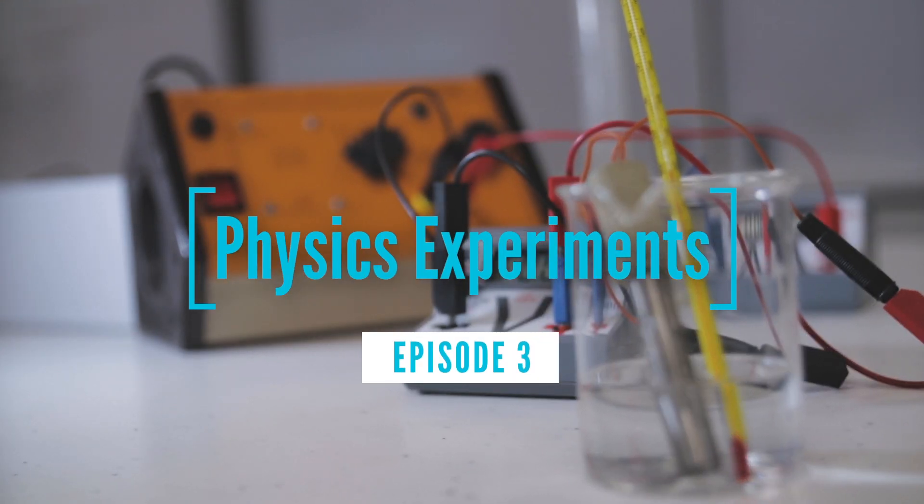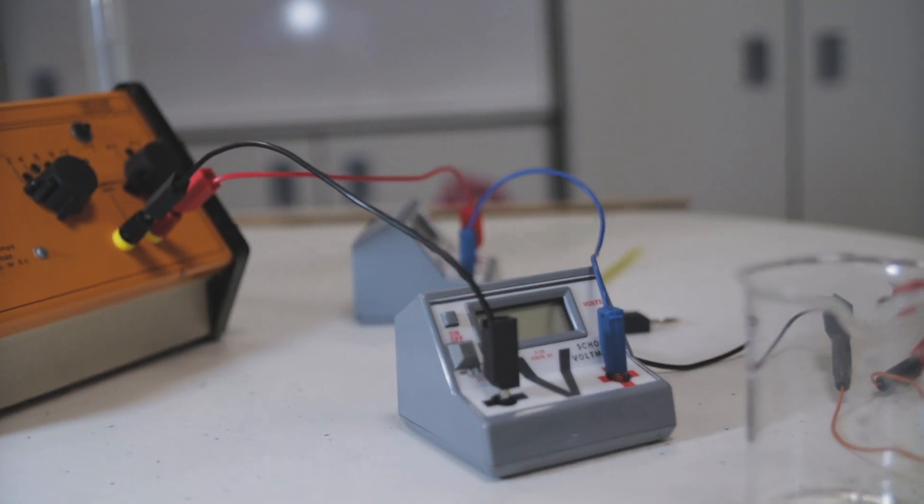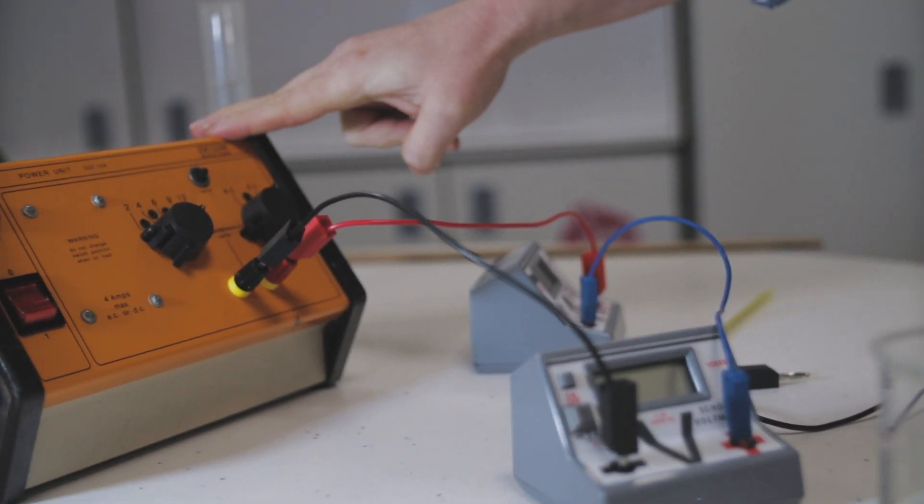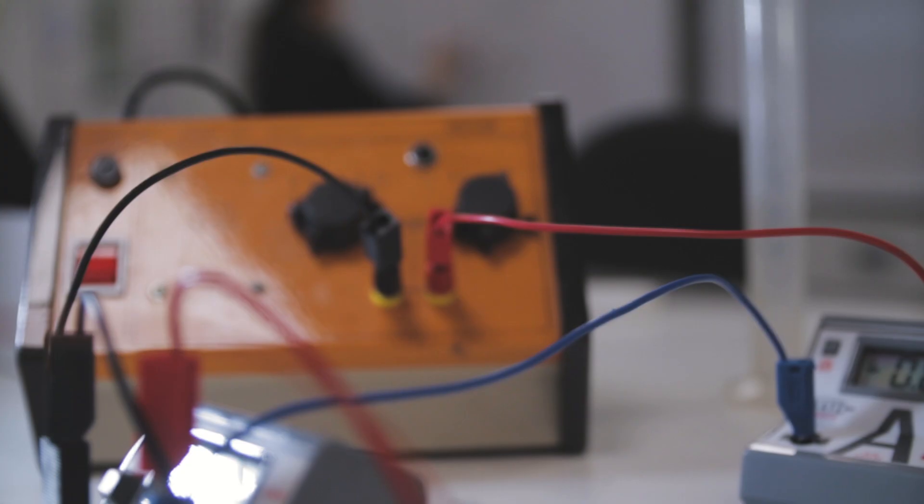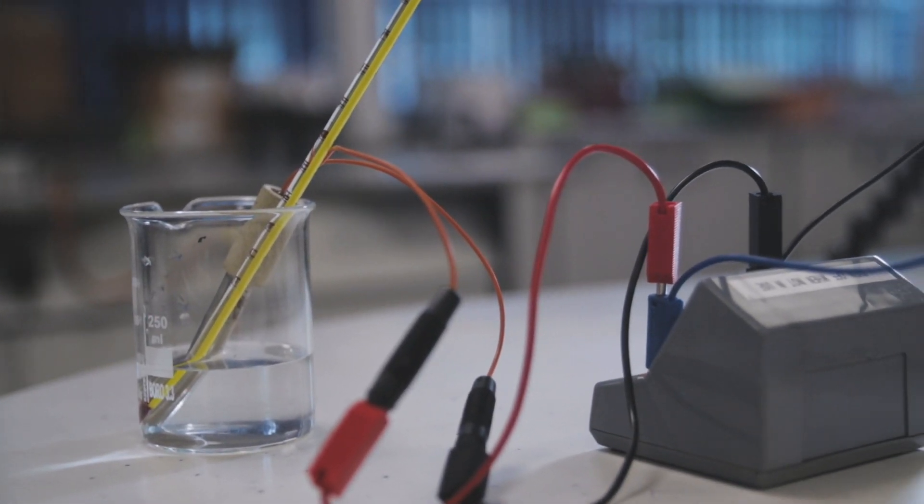The equipment that we are going to use looks something like that. We've got the power pack here which we're going to set to 12 volts because our immersion heater is rated 12 volts.